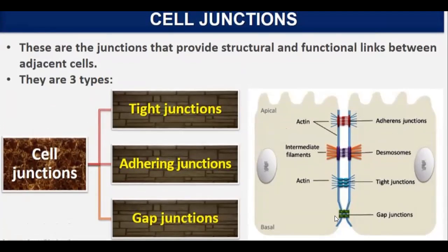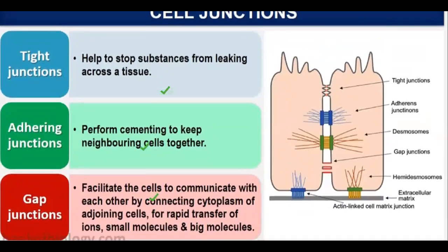Cell junctions are also part of tissue structure. These junctions provide structural and functional links between adjacent cells. There are three types: tight junctions, adhering junctions, and gap junctions. Tight junctions help stop substances from leaking across a tissue — the two tissues are tightly packed so no leakage occurs.